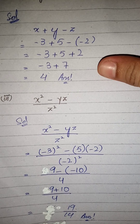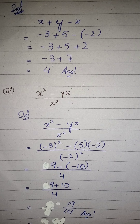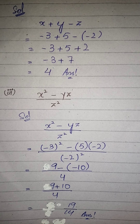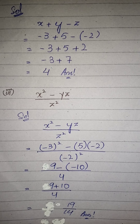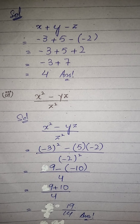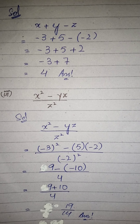Question number 1 کا second part آپ کا homework ہے۔ تیسرا part ہے: x square minus y z upon z square۔